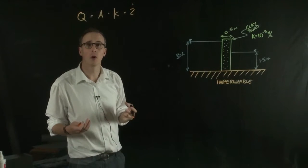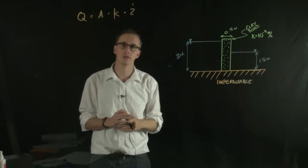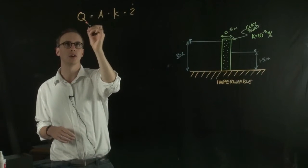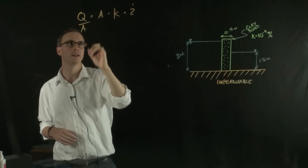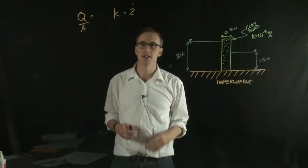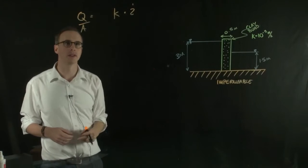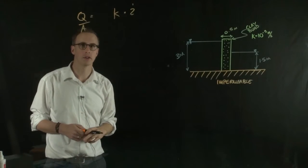What we're trying to answer is the flow per metre squared of bund. So we can just divide the flow per area and write the equation like this. So the flow per area is equal to the permeability times the hydraulic gradient.